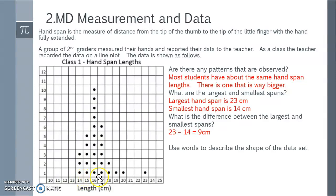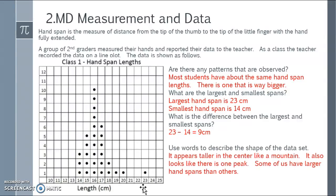We could use a line graph to do that, or we already have it listed here. We can count 1, 2, 3, 4, 5, 6, 7, 8, 9 counting right on that line plot. Use words to describe the shape of the data. To me it appears taller in the center like a mountain. It also looks like there is just that one peak, and some of us have larger hand spans than others. This is very subjective to what you or your students might see.